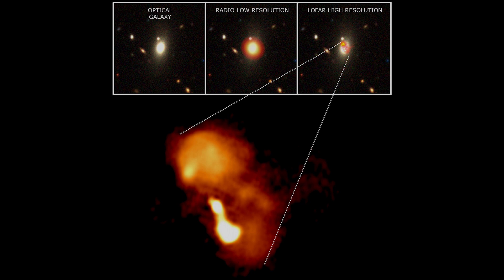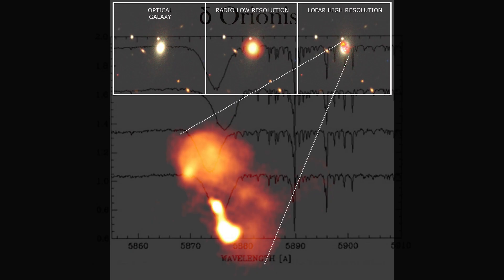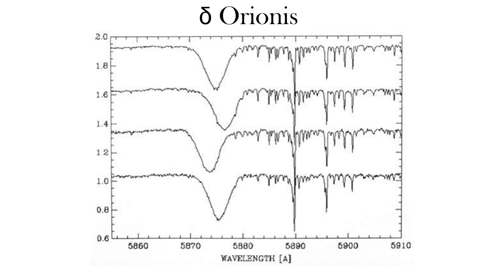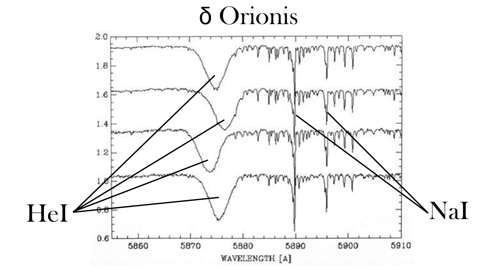Here is a modern example of Delta Orionis, taking over four nights at the Tautenberg telescope. The broad helium lines are clearly seen shifting due to the motion of the stars, while the nearby narrow spectral lines of sodium remain stationary since they do not originate from the stars, but the interstellar medium that fills the space from the Earth to the star.